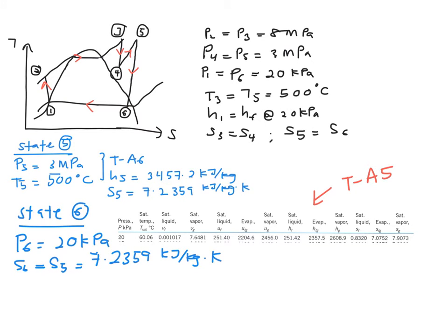Since it is in the mixture region, you will need to find the quality of your mixture which is your x value. Recall back in your notes, you have this general equation which is y is equal to yf plus x yfg. In this case, we are trying to look for your x by using your S value. So you have S6 is equal to Sf plus x sfg where the sfg and sf can be read from table E5 at your pressure 20 kPa.